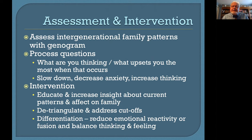When assessing a family like the Greens using Bowen's model, it's important to assess family patterns, and the tool to do this is a genogram. The purpose of doing a genogram is to help the family discover patterns that have happened over the generations and to help them understand those patterns by using process questions such as, 'What are you thinking about as we discuss this particular pattern?' or 'What upsets you most when you see this occurring?' Bowen tries to slow things down, decrease anxiety, and increase thinking by asking these types of questions.